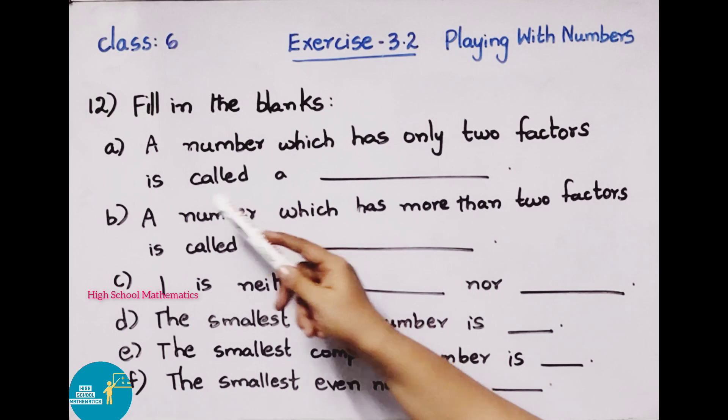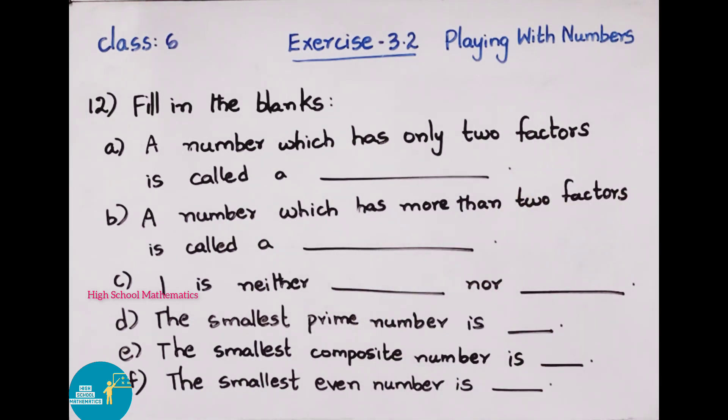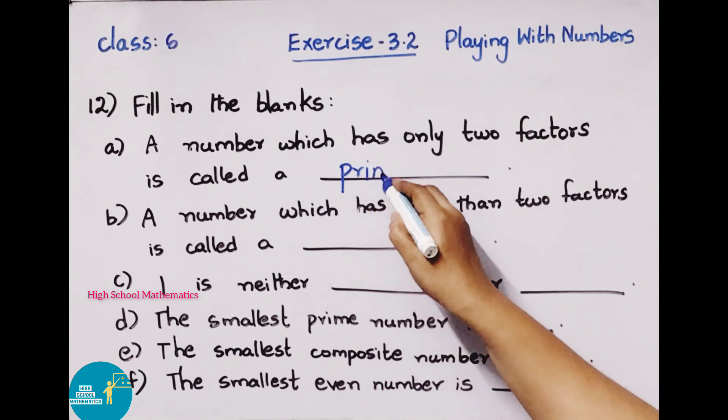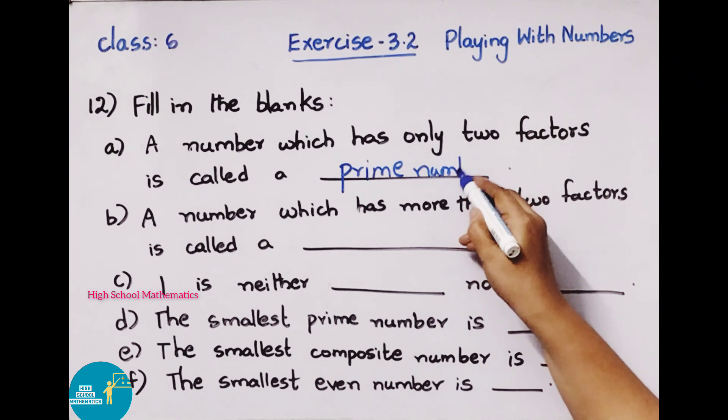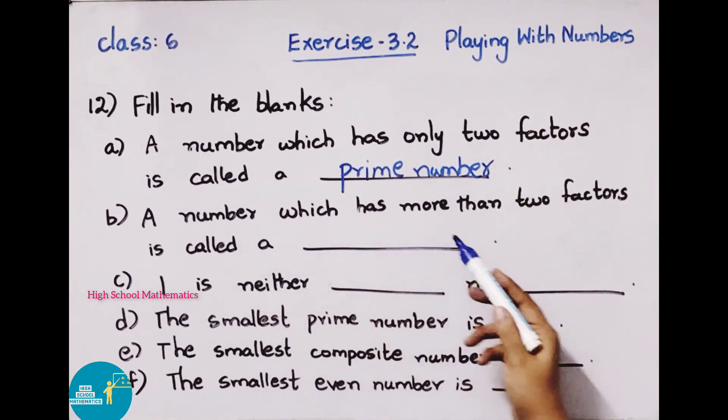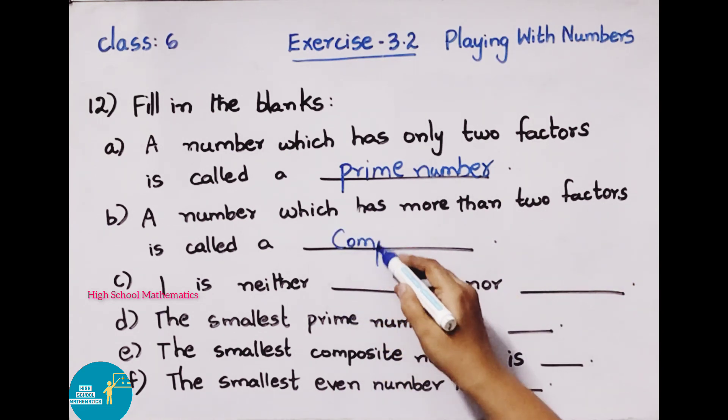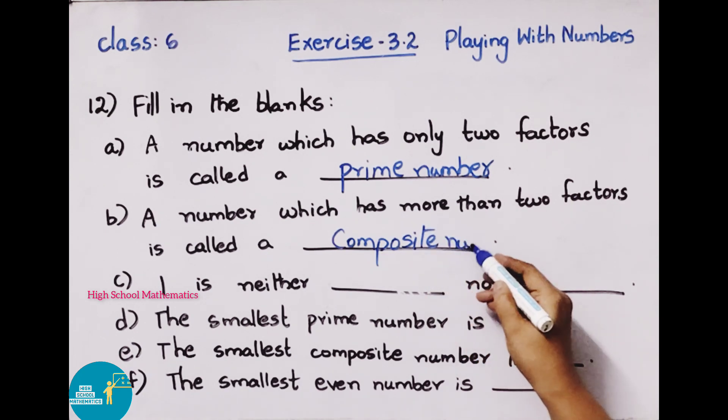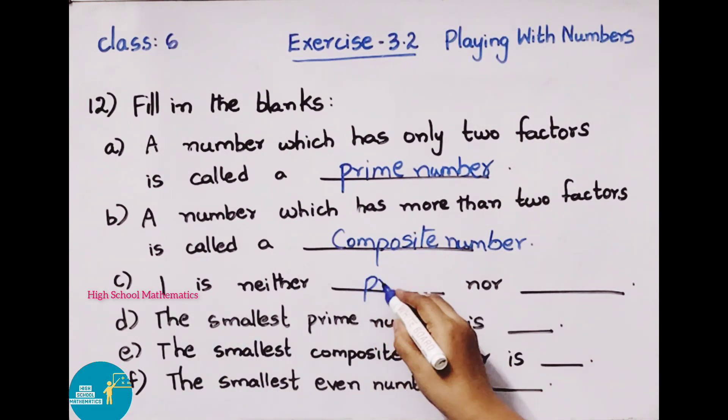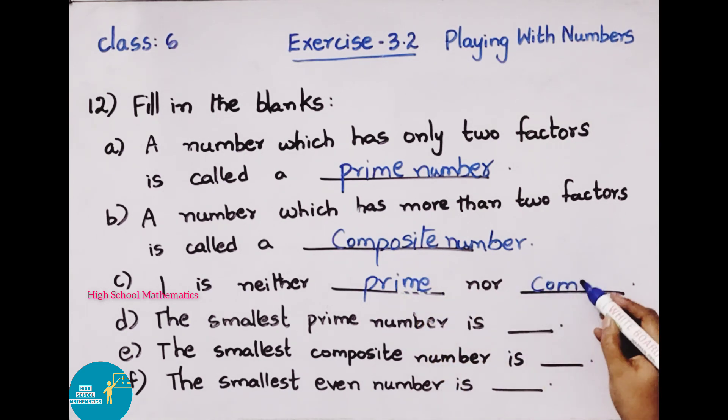Next, twelfth question. Fill in the blanks. a) A number which has only 2 factors is called a prime number. b) A number which has more than 2 factors is called a composite number. c) 1 is neither prime nor composite. d) The smallest prime number is 2. e) The smallest composite number is 4. f) The smallest even number is 2.